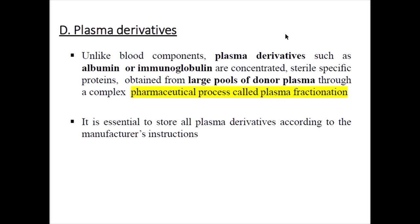Plasma derivatives such as albumin and immunoglobulin are obtained from large pools of donor plasma through a complex pharmaceutical process called plasma fractionation, because sufficient concentrations cannot be obtained from a single donation. It is essential to store all plasma derivatives according to the manufacturer's instructions.